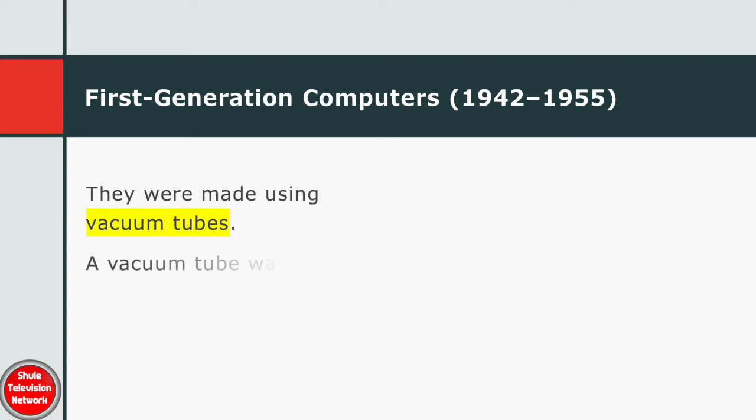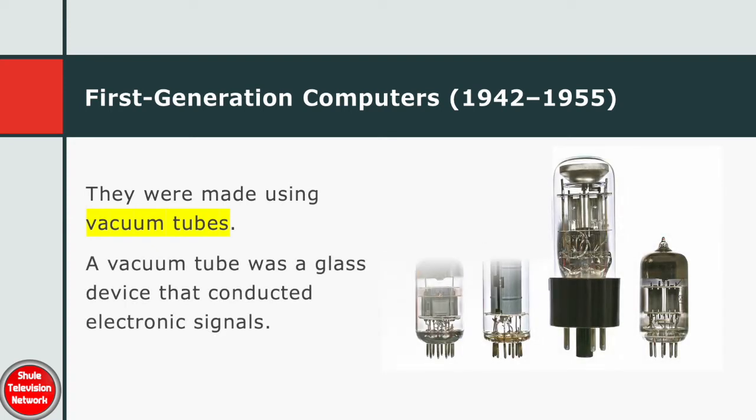First generation computers were made using vacuum tubes. A vacuum tube was a glass device that conducted electronic signals.